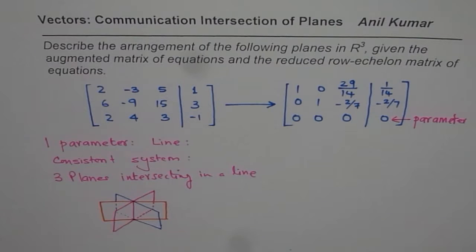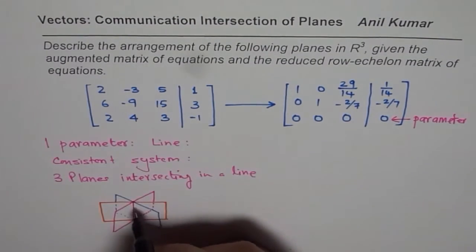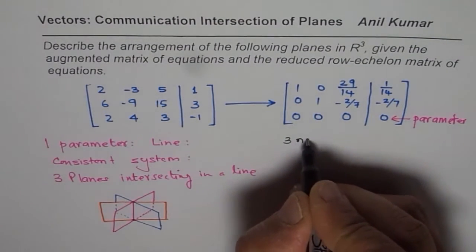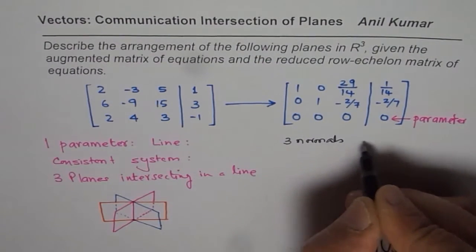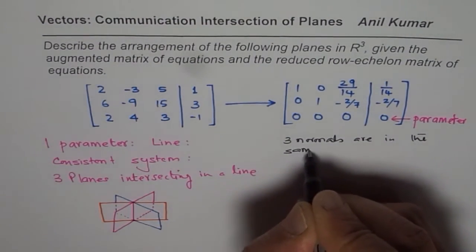Now here is some additional information which I would like to share with you. Very few people explain these parts. Why this type of situation? It means that three normals are in the same plane. This is possible because there is a common line.